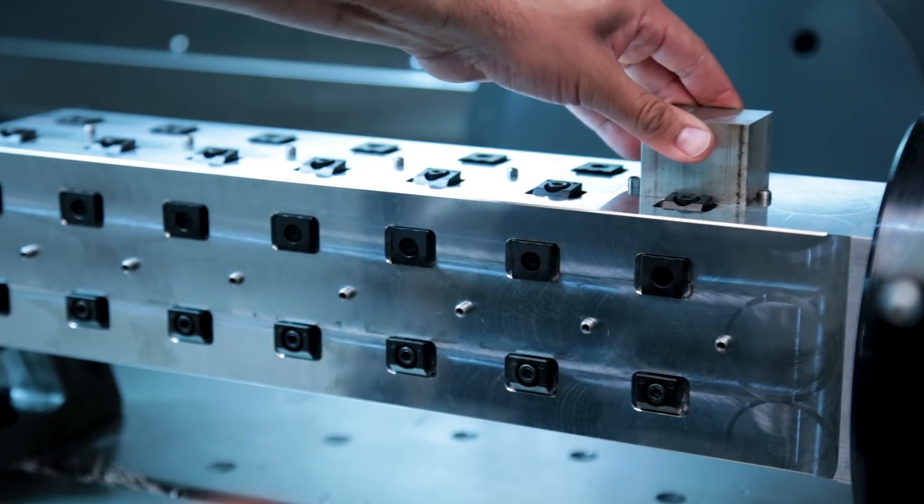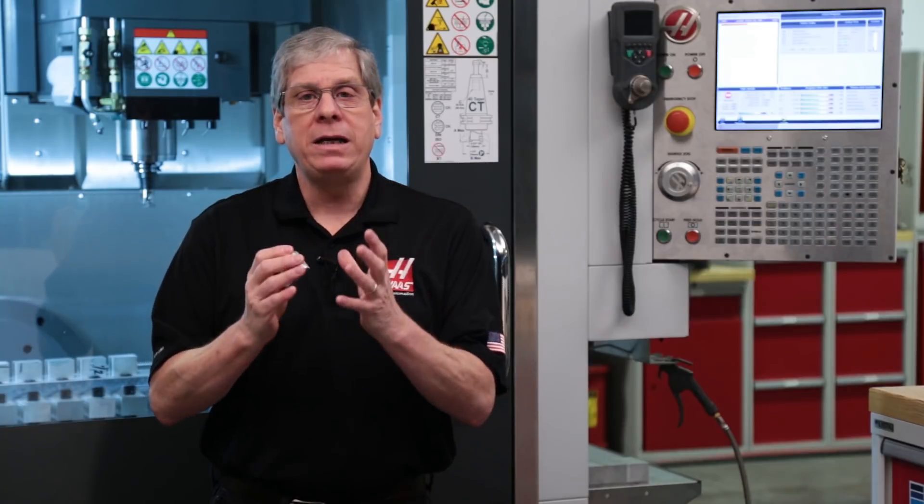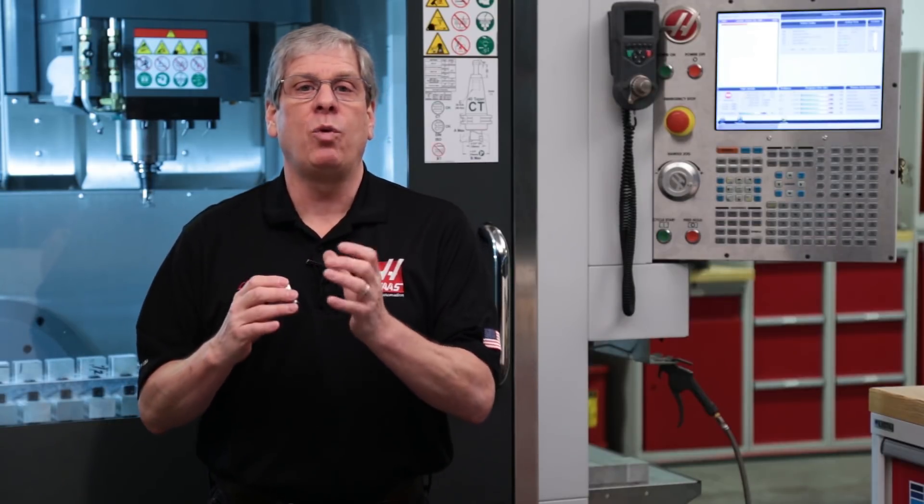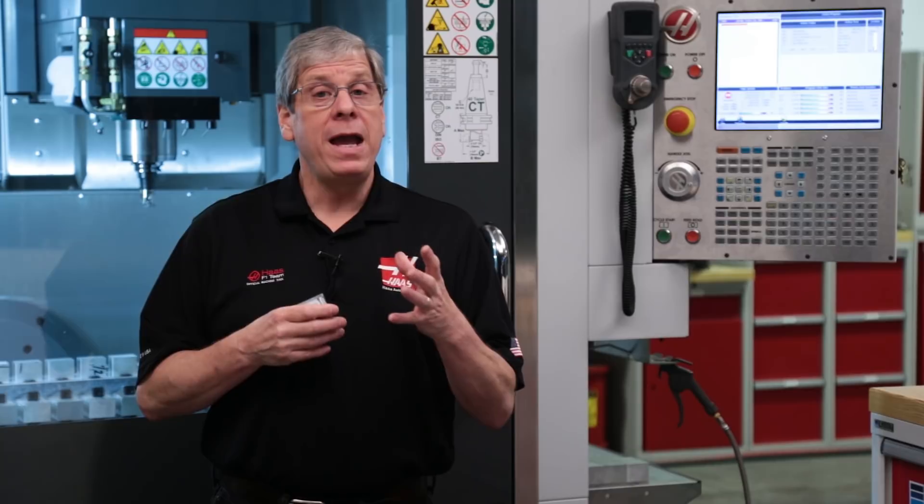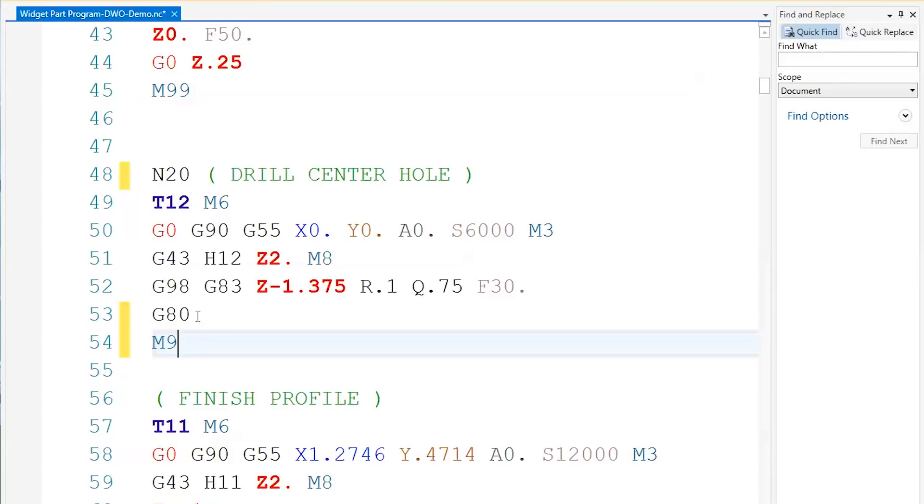I loaded up one part, proofed my program, and optimized my code and got my cycle time down to 4 minutes and 24 seconds. Next, I manually edited each tool operation into its own subroutine by simply adding a unique end number at the start of the tool and an M99 at the end of each tool.